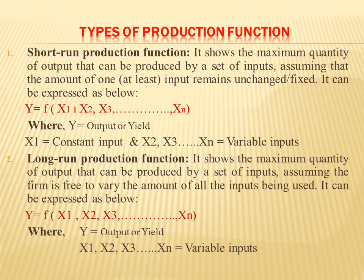In the short-term production function, at least one resource or input remains constant while other factors of production may vary, but at least one input remains unchanged. We can write the short-term production function as: y is a function of x1 bar, x2, x3, and xn, where y denotes yield or output, x1 bar denotes the constant input, and x2, x3, and xn denote variable inputs. So in the short-term production function, one input is constant and the remaining are variable inputs.